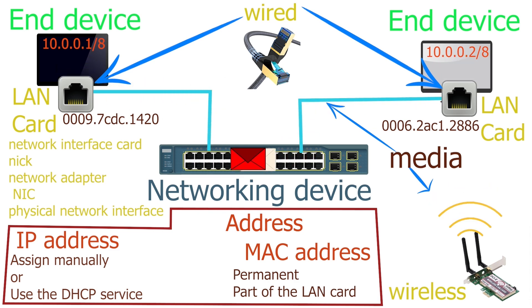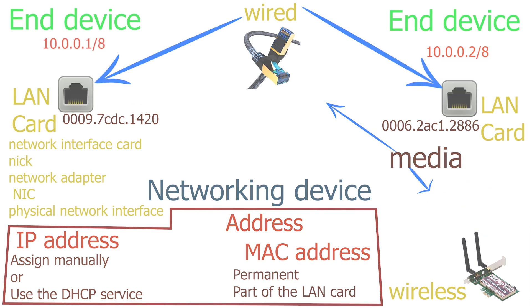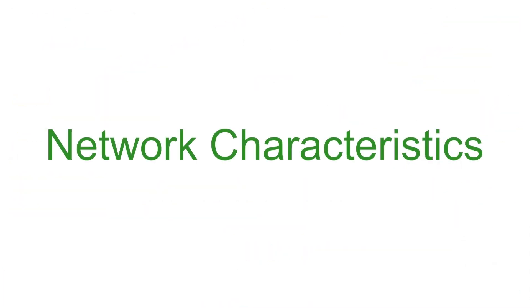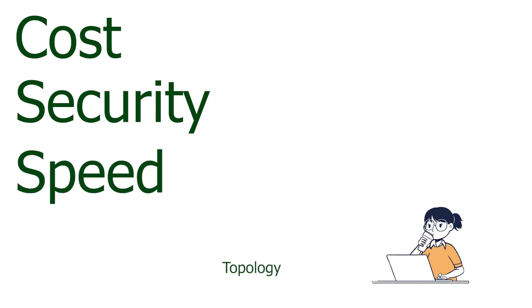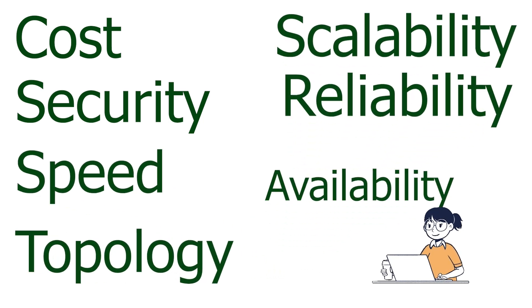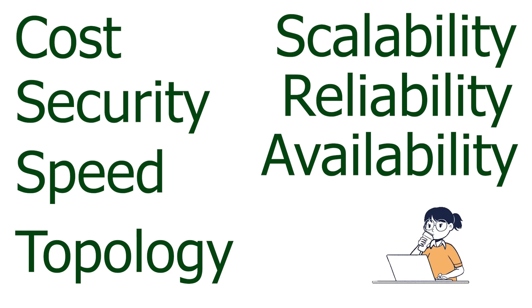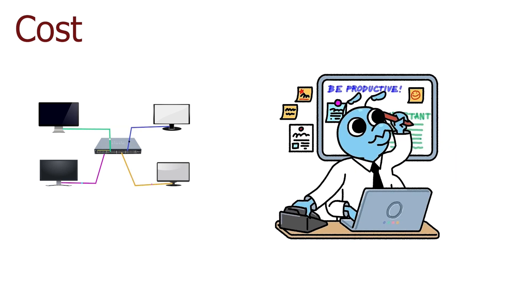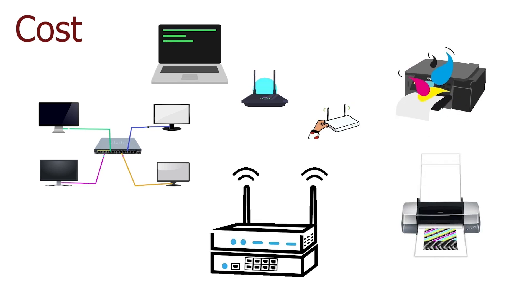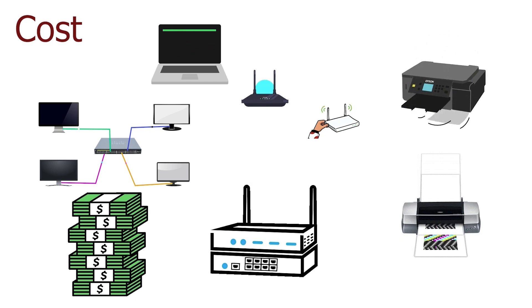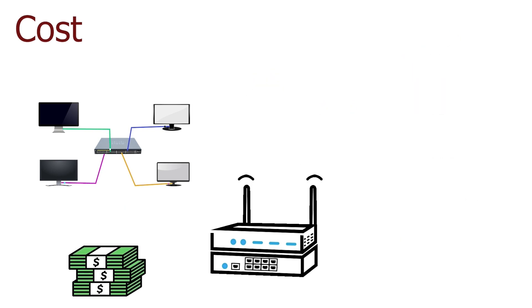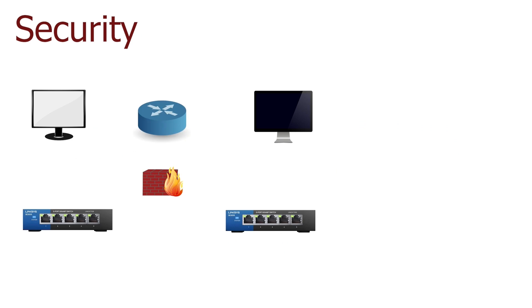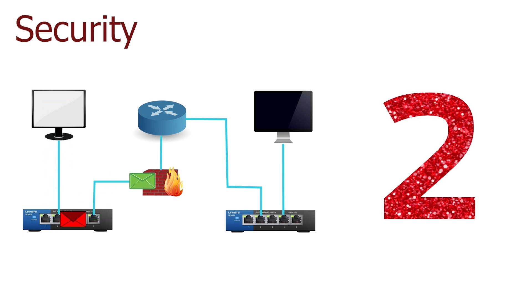Now let us understand some basic terms that describe network characteristics. Cost, security, speed, topology, scalability, reliability, and availability are the characteristics Cisco administrators use to define network properties. Cost is the price you pay to install and manage the network, and a network administrator considers it first while building a network. A network needs many components, and each component increases the network cost — administrators add only required components and exclude optional ones to reduce cost. Security defines steps administrators take to protect network components and the data they transmit. There are two methods to implement security: software and hardware.